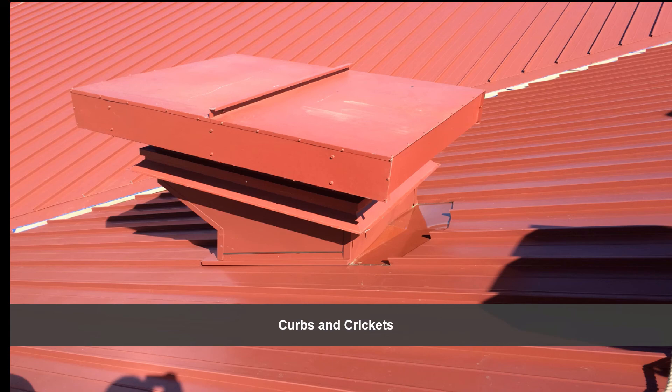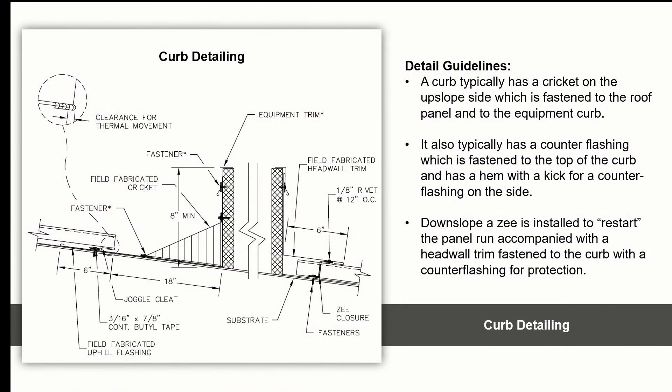Here is a proper installation of a curb with crickets. A curb typically has a cricket on the upslope side, which is fastened to the roof panel and to the equipment curb, in order to divert water around the sides so it doesn't collect and pool on the upslope side. It also typically has a counter flashing fastened to the top of the curb with a hem and kick for counter flashing on the side. Downslope, a Z is installed to restart the panel run, accompanied with a head wall trim fastened to the curb with a counter flashing for protection. This allows the upslope and downslope panels to move independently with the curb.